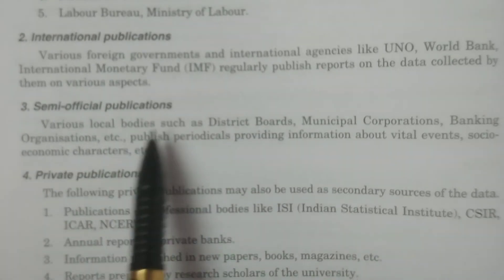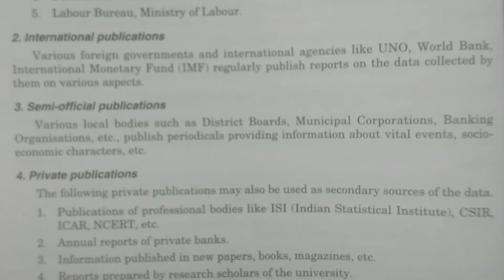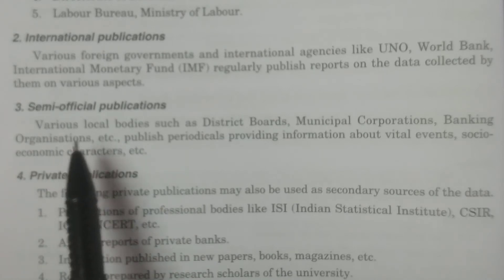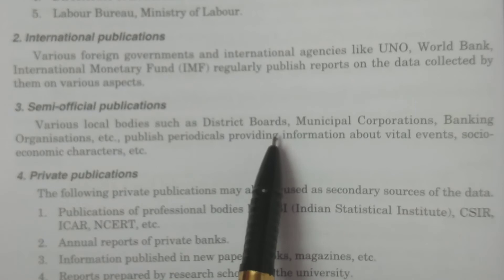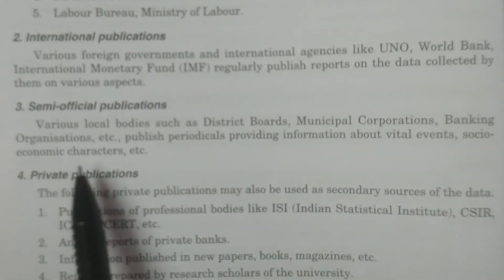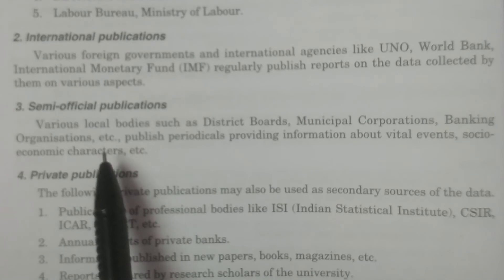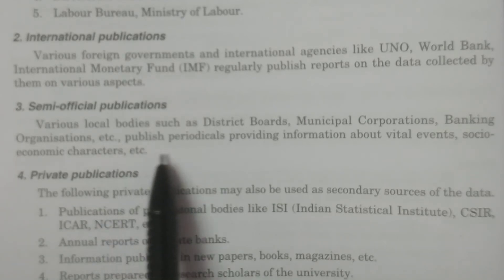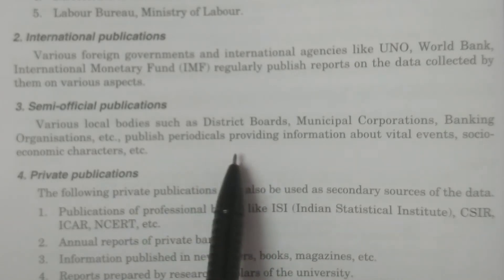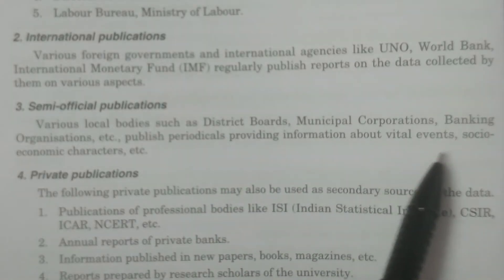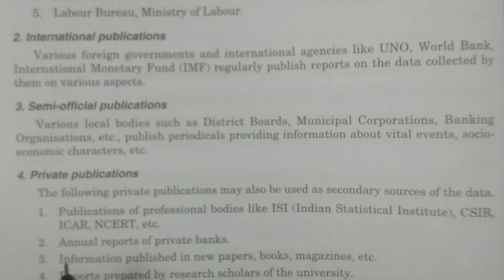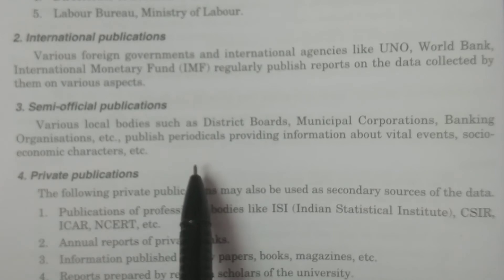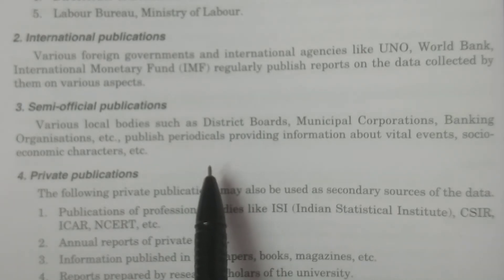The third type is semi-official publications. Various local bodies such as district boards, municipal corporations, and banking organizations come under semi-official publications. These publish periodicals providing information about vital events and socioeconomic characteristics — whatever variables they select for their own purpose — and publish in their magazines or records and reports.